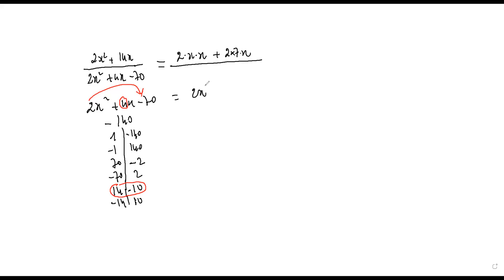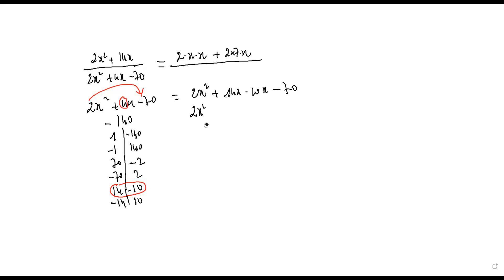We split as two x squared plus fourteen x minus ten x minus seventy. Two x squared is two times x times x, and fourteen x is two times seven times x. Minus ten times x, and seventy is seven times ten. The common factor in the first two terms is 2x.